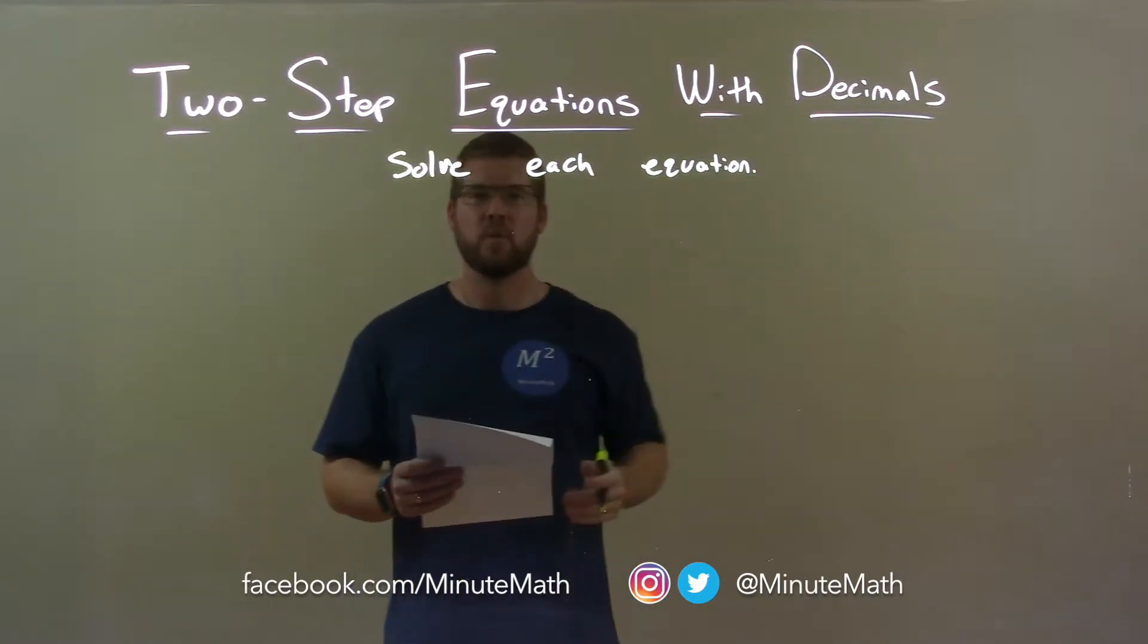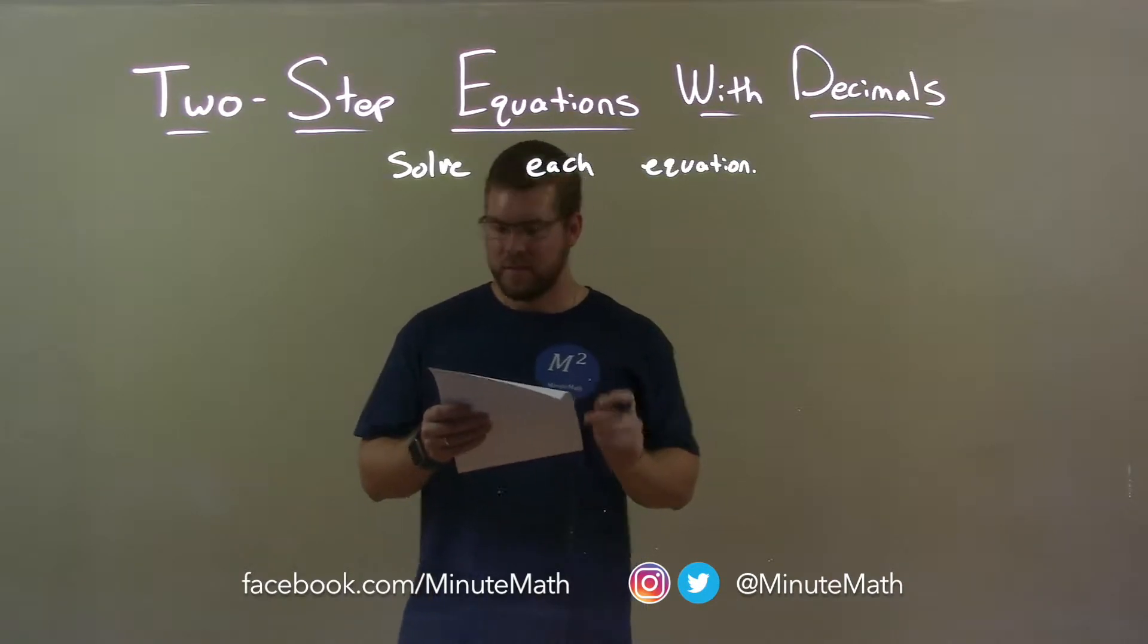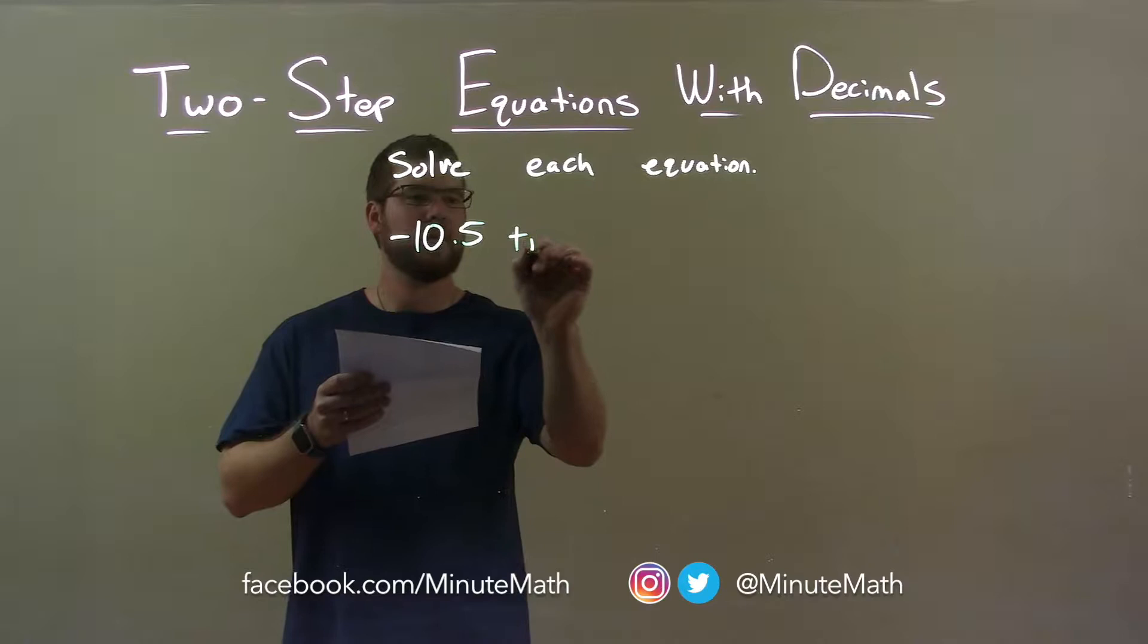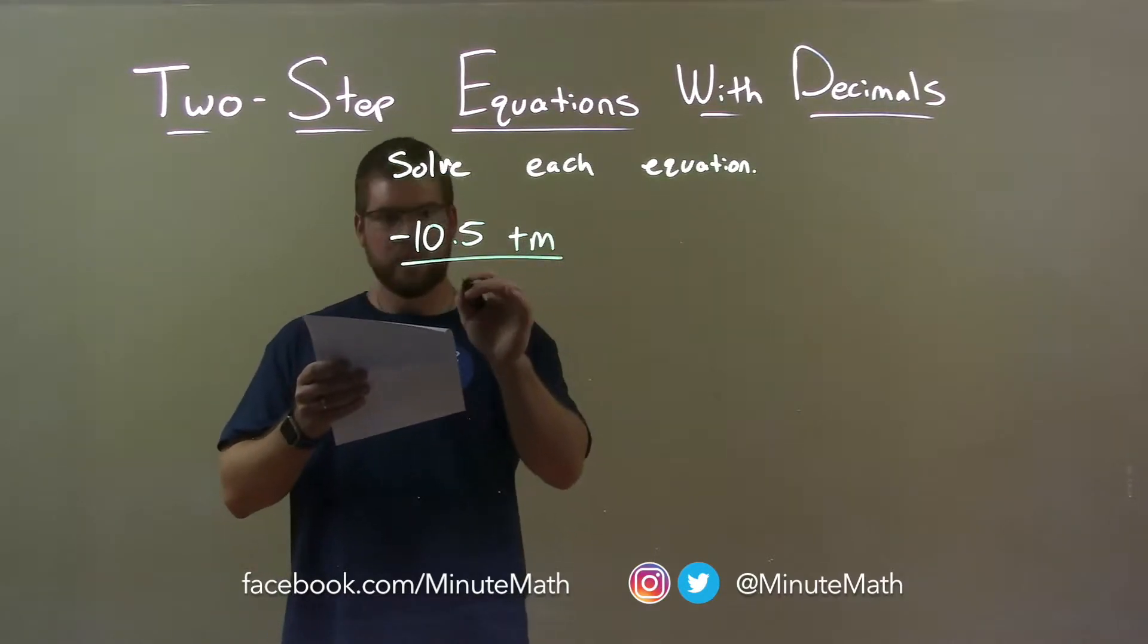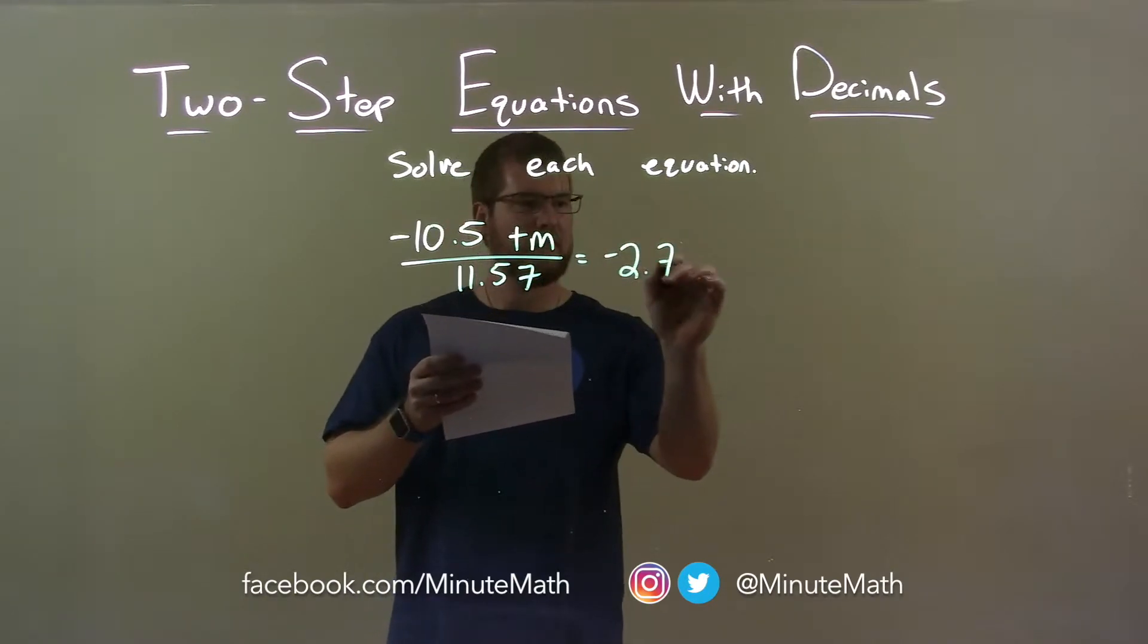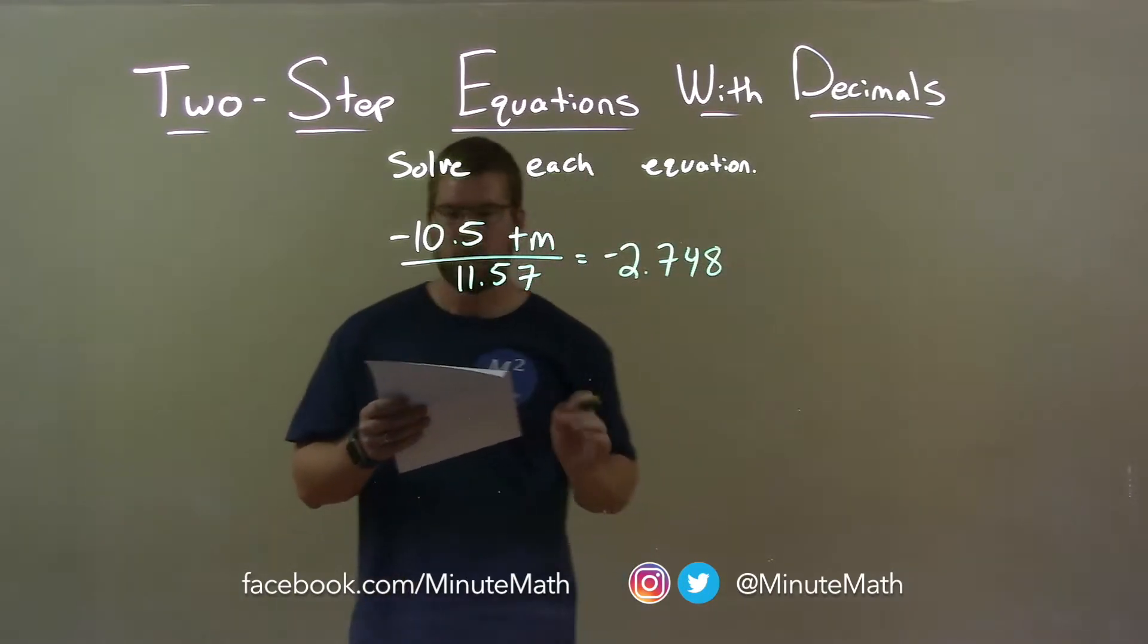We're going to solve each equation. Now, if I was given this equation, negative 10.5 plus m over 11.57 equal to negative 2.748, alright?